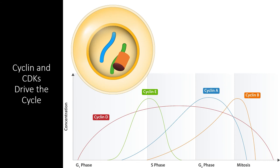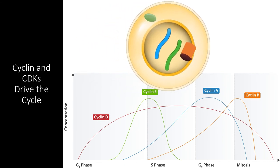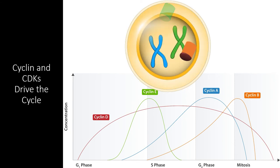As the cell passes the G1 checkpoint, cyclin E is created. Cyclin E activates a cyclin E specific CDK that starts the process of DNA replication and degrades cyclin E so that the replication process only happens one time.